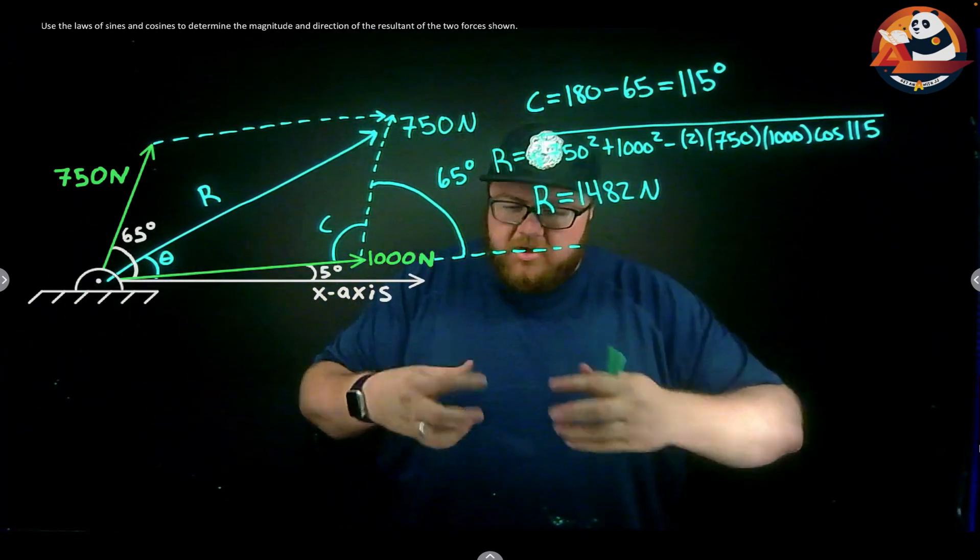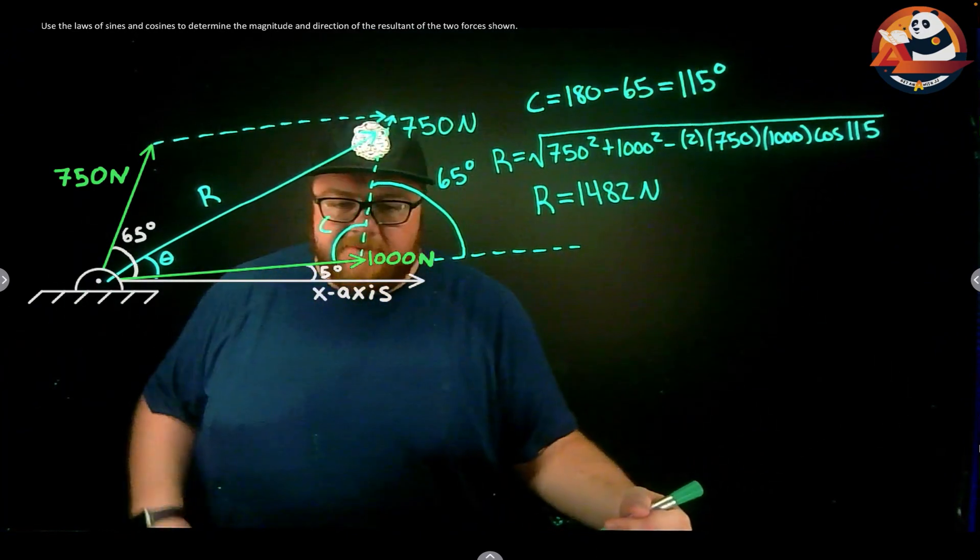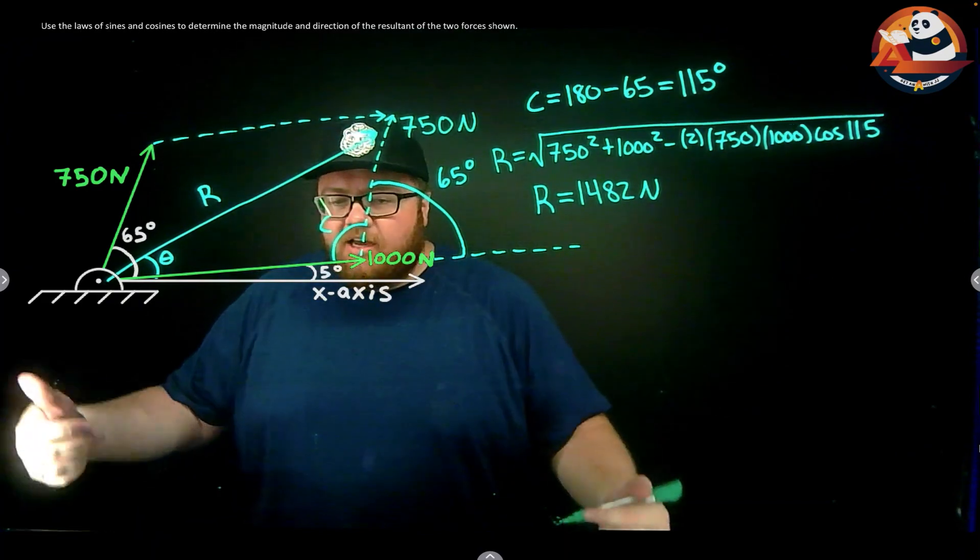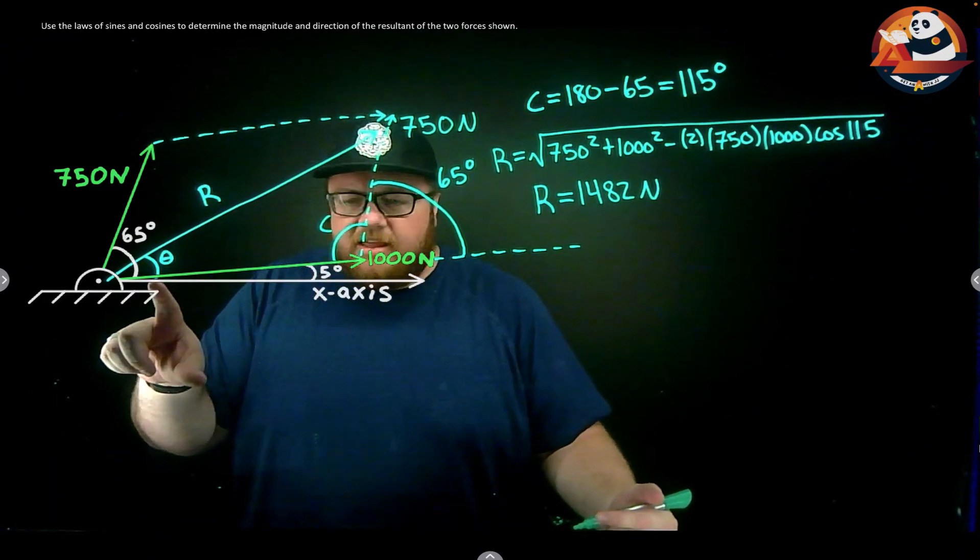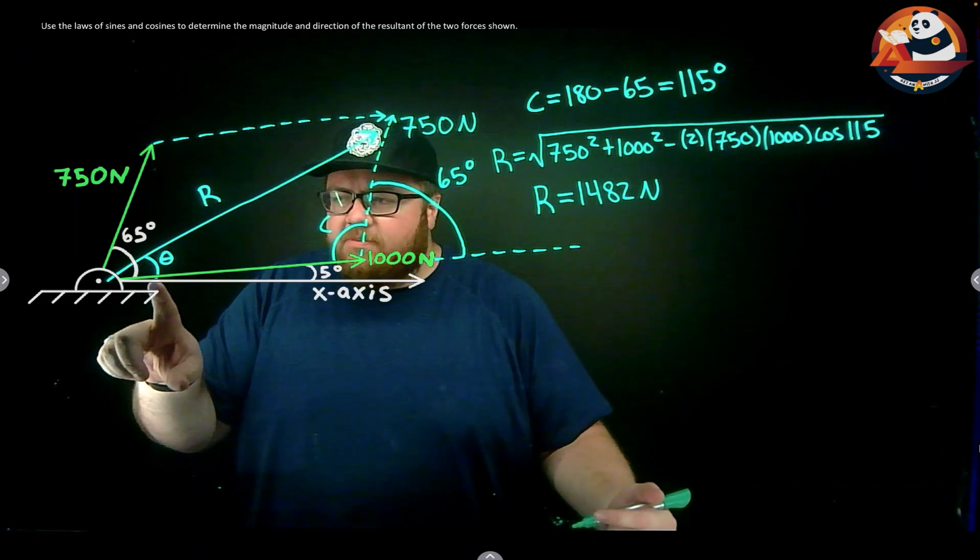I need the direction and we'll just pull those together into one answer statement. I've used law of cosines. My next approach is let's use law of sines. Law of sines isn't going to get me theta though - it would give me what's my angle from either 1000 to R or from 750 to R.